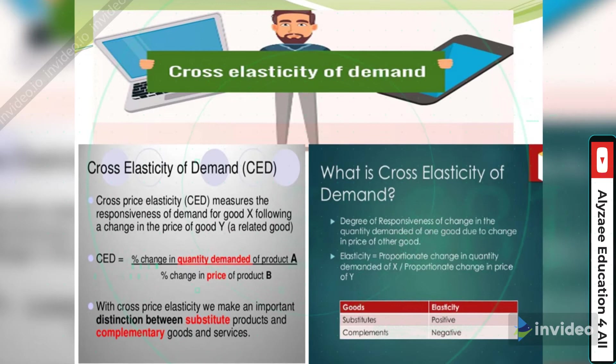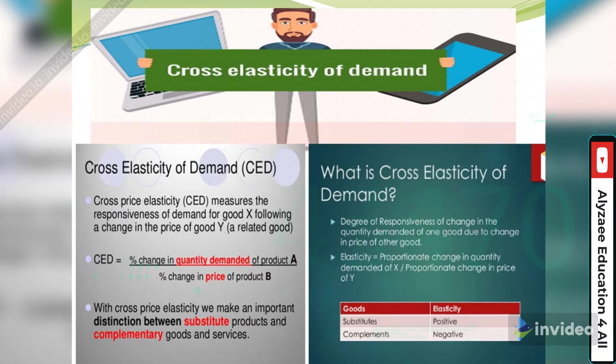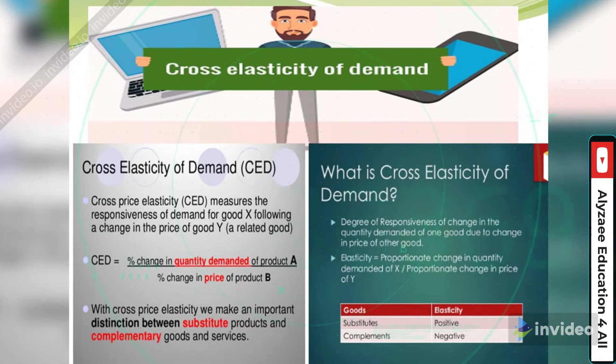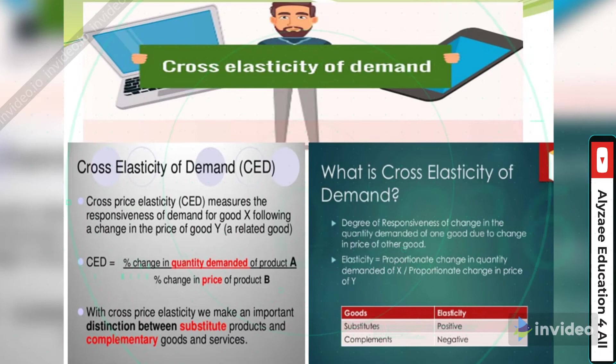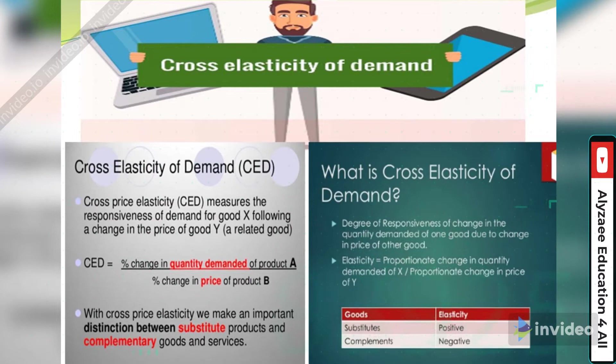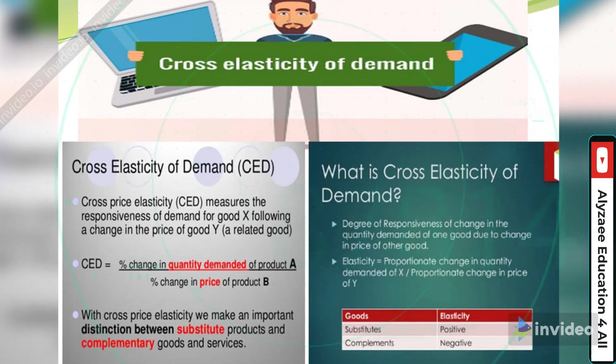Now if you look at the definitions of the cross elasticity of demand for better understanding, we can get the explanation like cross price elasticity measures the responsiveness of demand for good X following a change in the price of good Y, and that is basically related goods. So CED is equal to percentage change in the quantity demanded of product A divided by percentage change in price of product B. With cross price elasticity we make an important distinction between substitutes or complements.